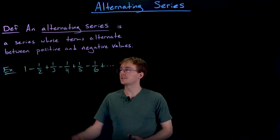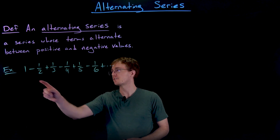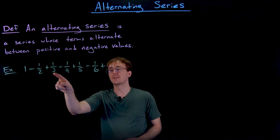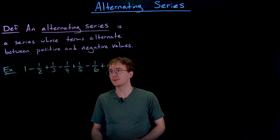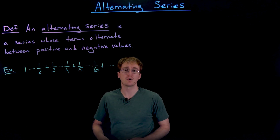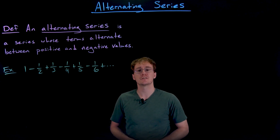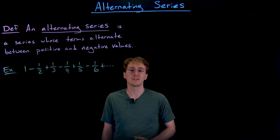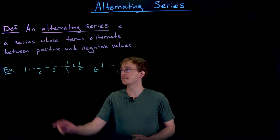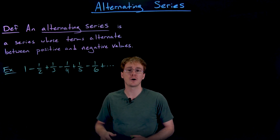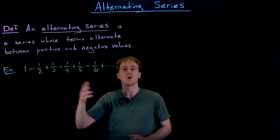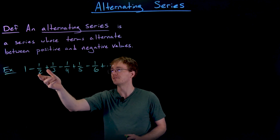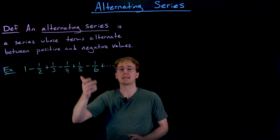Here's an example of an alternating series. Our first term is one, our second term is negative one-half, the third term is positive one-third, the fourth term is negative one-fourth, and so on. This series should look very familiar — it resembles the harmonic series we discussed earlier. The difference is we have the same terms but now the signs are alternating: first positive, then negative, positive, negative, and so on.